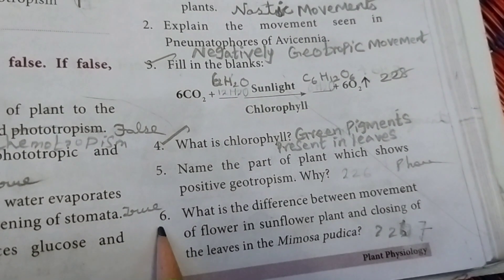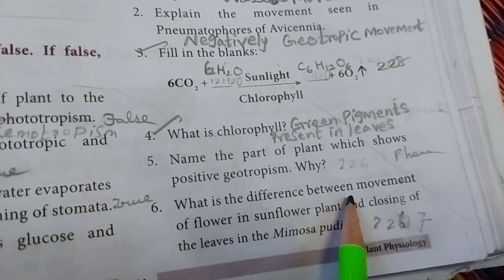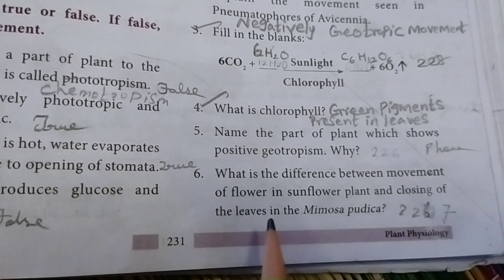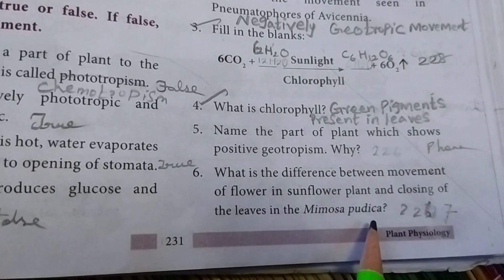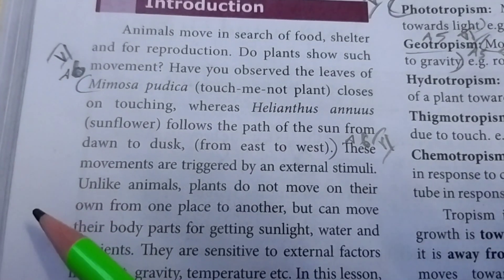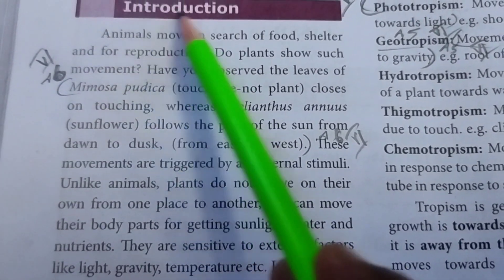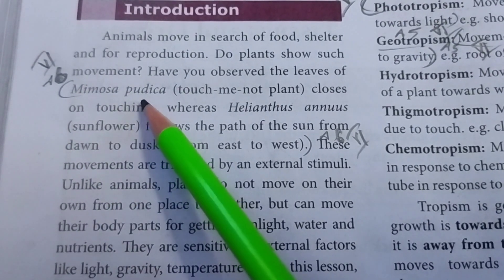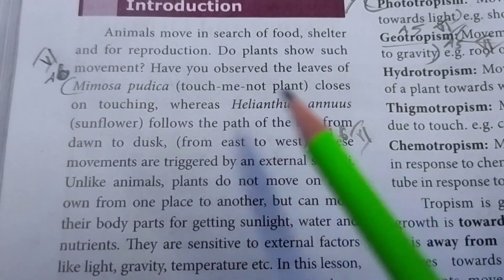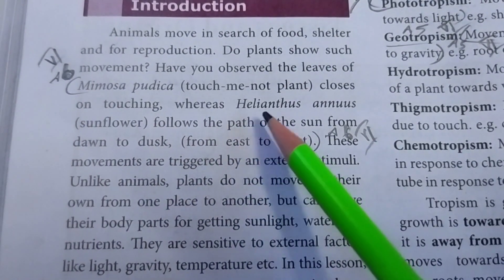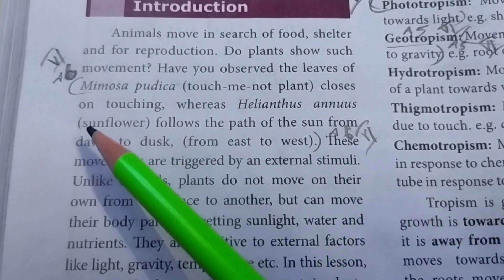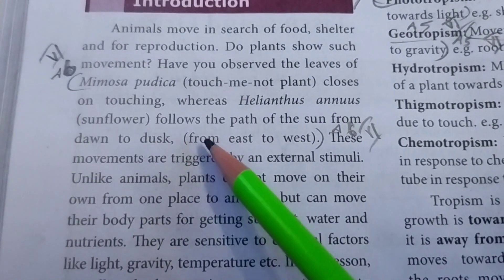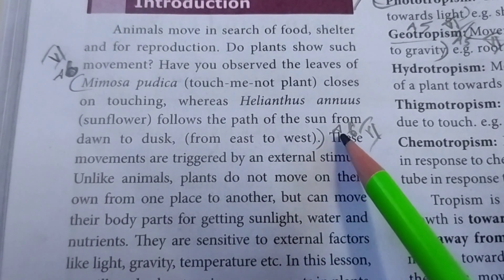Sixth question: what is the difference between movement of flower in sunflower plant and closing of leaves in Mimosa pudica? Take page 226. Mimosa pudica, the touch-me-not plant, closes on touching. Whereas Helianthus annuus, the sunflower, follows the path of the sun from dawn to dusk, east to west.